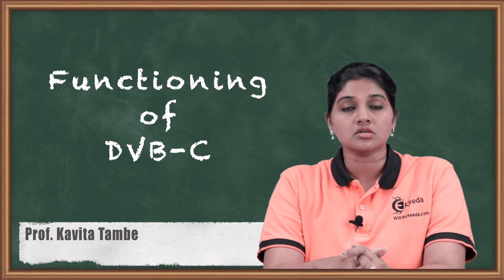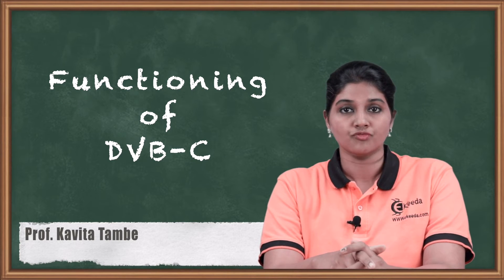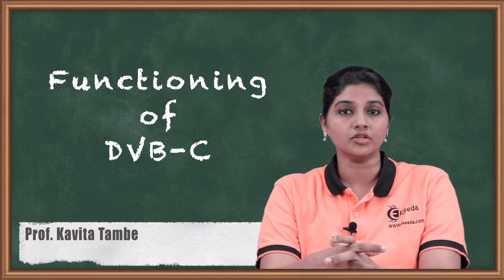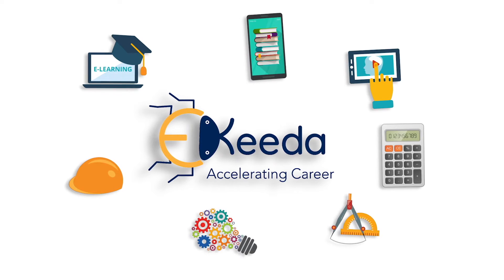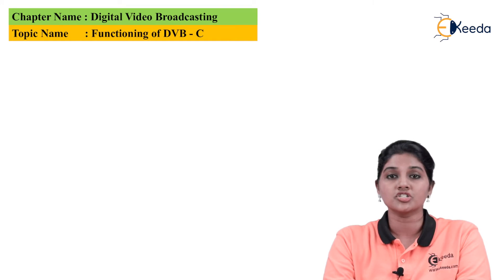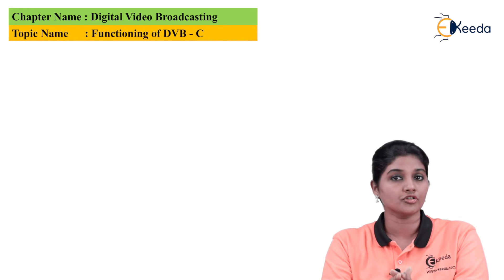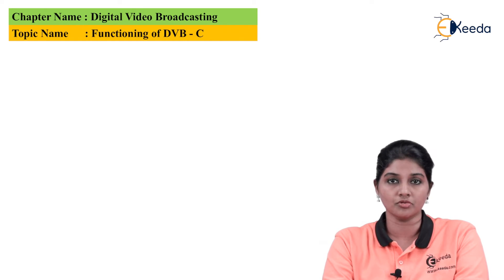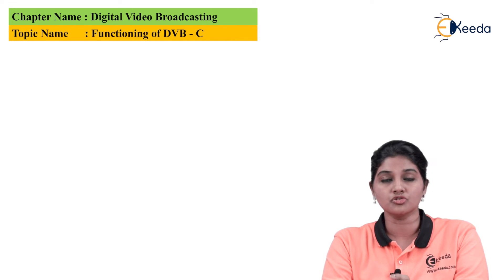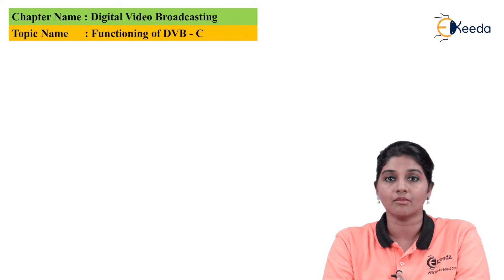In this video we are going to discuss the functioning of DVB-C, which includes the functioning and operation of the DVB-C receiver. DVB-C stands for Digital Video Broadcasting Cable, which provides a standard for cable television systems for the transmission of digital data, digital audio, and digital video signals, or a combination of both. The DVB-C standard uses MPEG-4 and MPEG-2 methods for signal transmission.